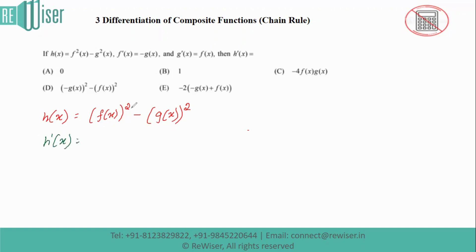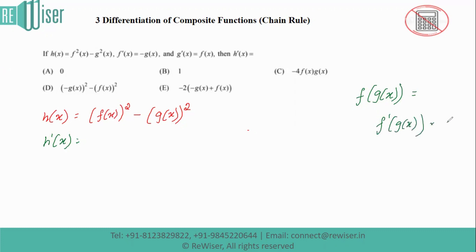To find the derivative of f(x) whole square, we need to apply the chain rule. The chain rule states that the differentiation of f(g(x)) equals f'(g(x)) multiplied by g'(x). So we differentiate the outer function keeping the inner function as it is, then multiply by the derivative of the inner function.